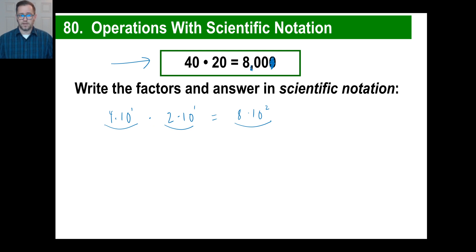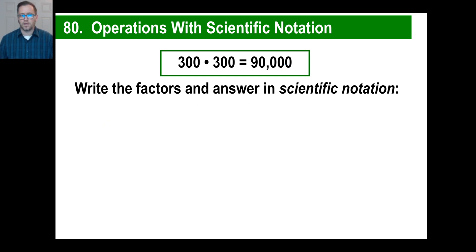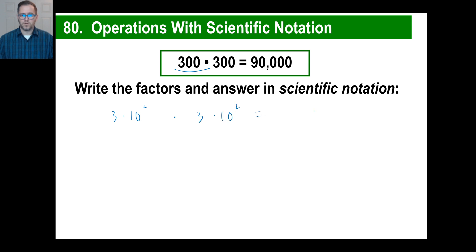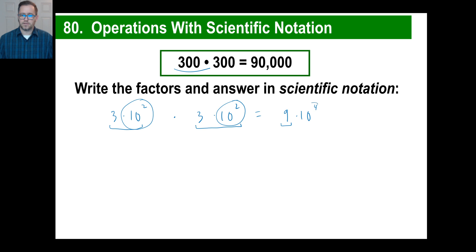Look at what you've done: you've got a 1 here and a 1 here, and 1 plus 1 gives you 2 in the exponent. Now let's do the second one — 300 times 300 equals 90,000. In scientific notation: 3 times 10 to the second, times 3 times 10 to the second, equals 9 times 10 to the fourth. The exponents add: 2 plus 2 is 4.